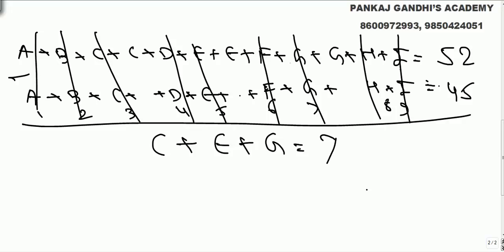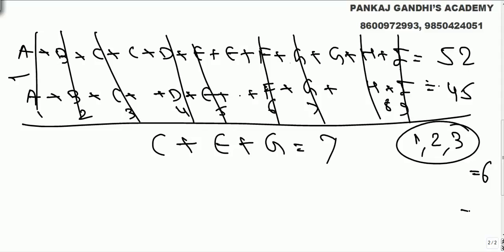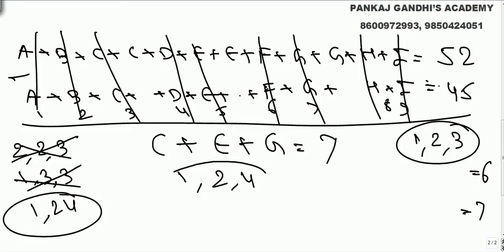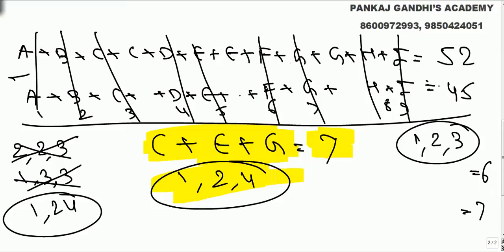C plus E plus G equals 7, and all three are different variables. Even the lowest possible combination sums to 6, but we need 7. Combinations like 2,2,3 or 1,3,3 repeat a digit, so the only valid combination is 1, 2, and 4. We don't know who is what among C, E, and G.